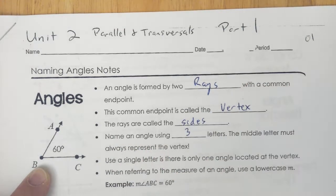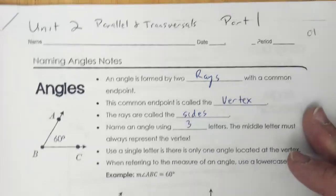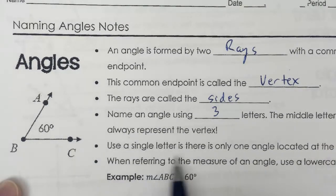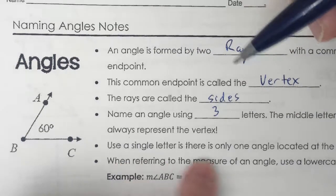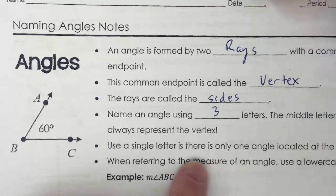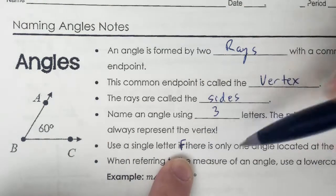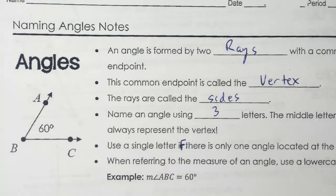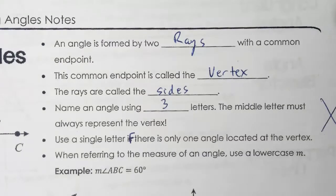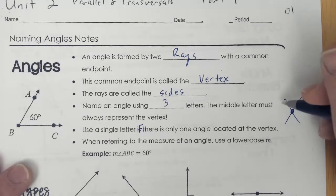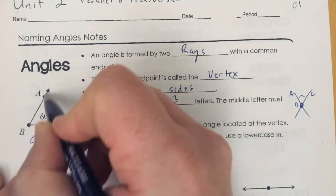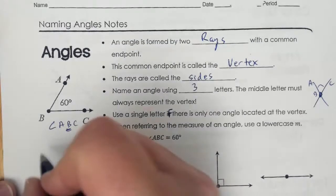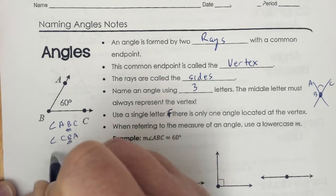Name an angle using three letters — the middle letter must always represent the vertex. Use a single letter if there is only one angle located at the vertex. So for this angle, we can call it angle ABC, angle CBA, or we can call it angle B.